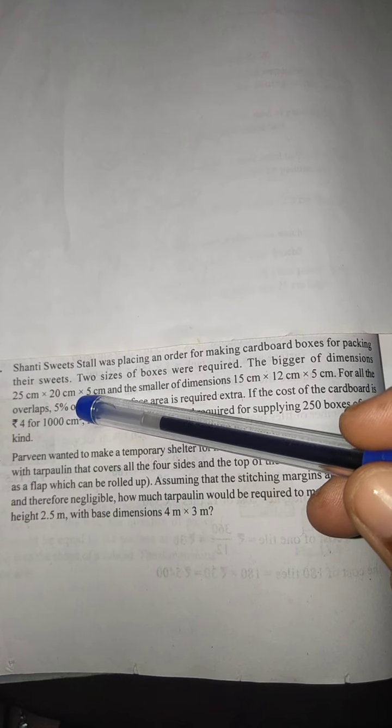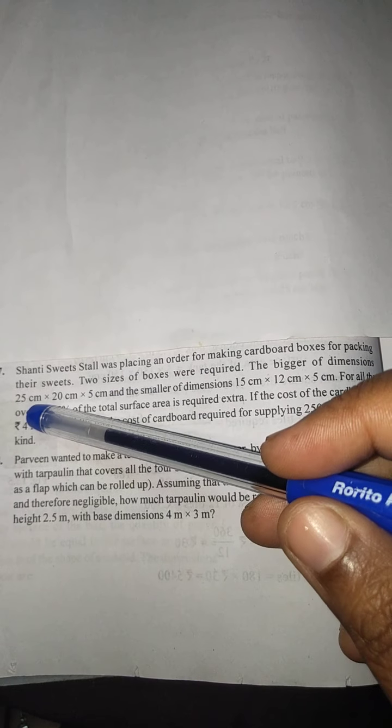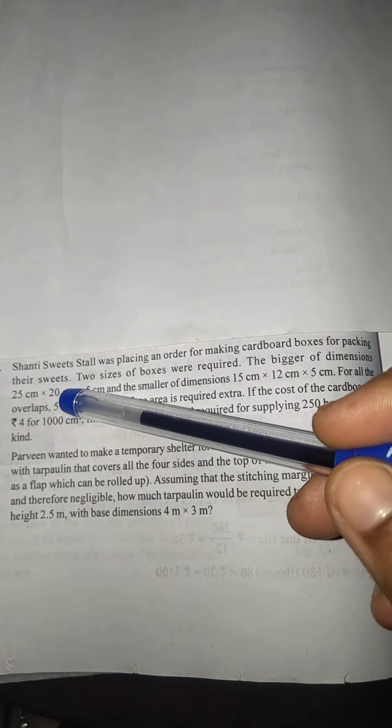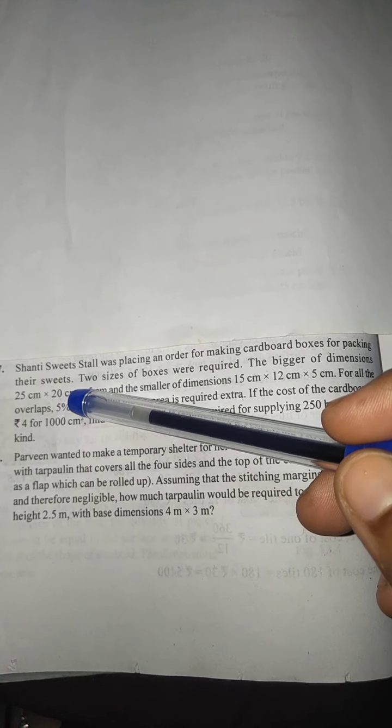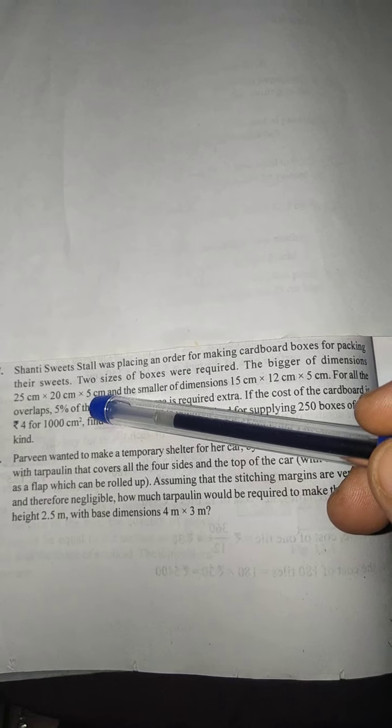The bigger dimension they have given - bigger box dimension. If the dimensions are given, you read it as l into b into h. Similarly here, l is 25 centimeters, b is 20 centimeters, and h is 5 centimeters for the bigger box.